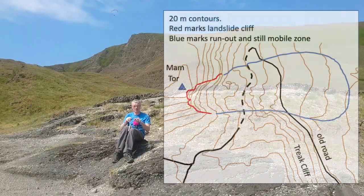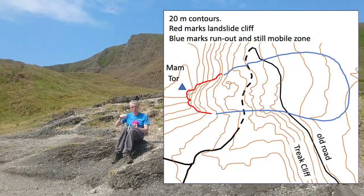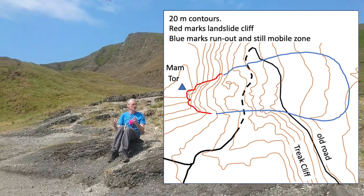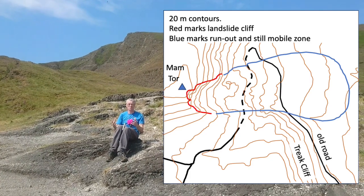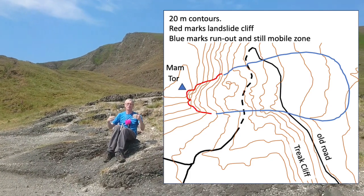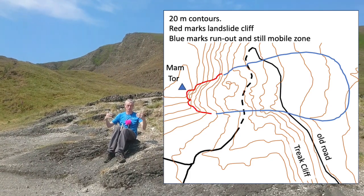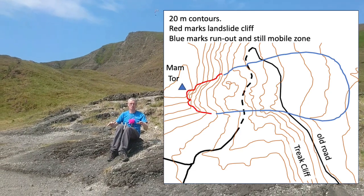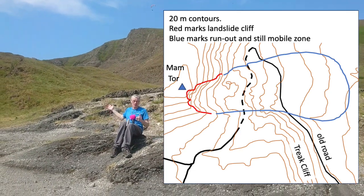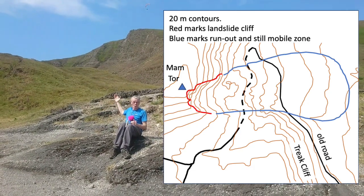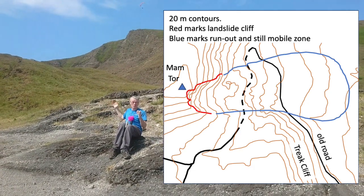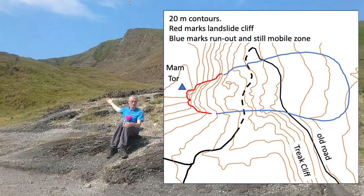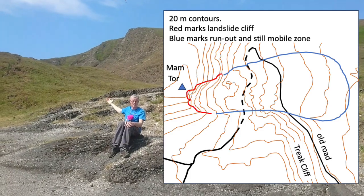You can see where the contours end up being very wiggly because they're disrupted around where the landslide was, and all of that land was sourced from the cliff face behind me here.